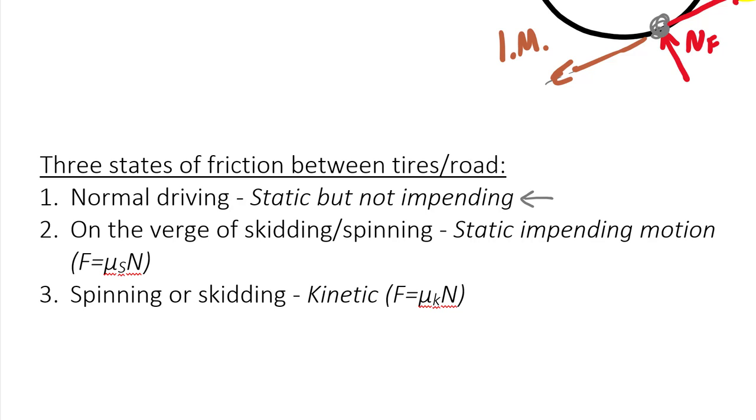If you are on the verge of skidding or slipping, you're at static impending motion. Okay, this is when your wheels just start to chirp a little bit, right? They're actually slipping a little bit then catching and slipping and catching. You're right at that verge of slipping or skidding or spinning. And if you are obviously spinning or skidding, you're getting into kinetic. Okay, so you can actually use all three different forms of friction.